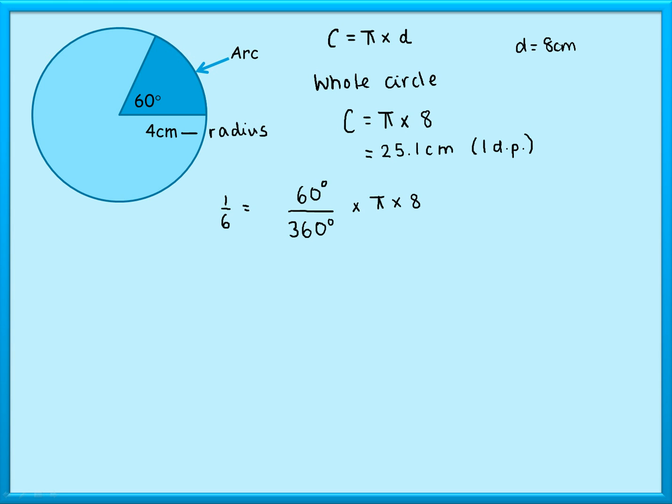So if I work out what that is, that's 4.188... so rounding that to one decimal place that would be 4.2 centimeters. Don't forget, because we're finding a length our units will be centimeters.